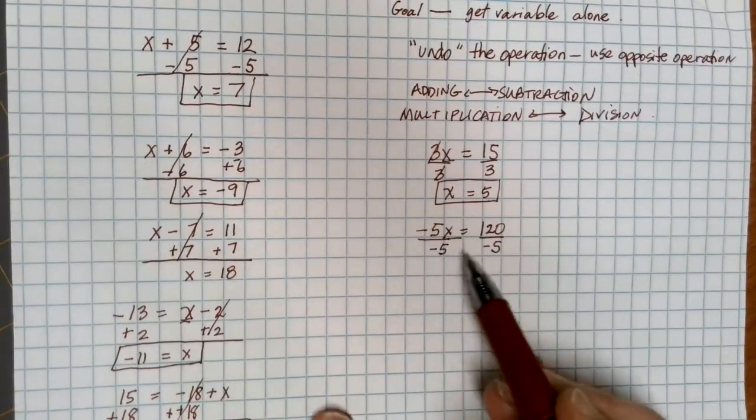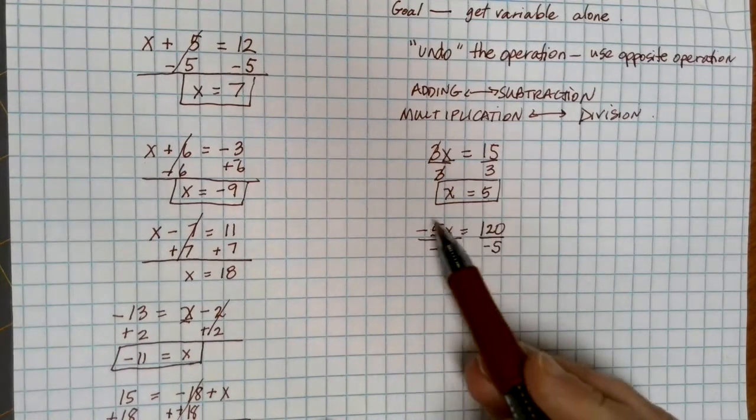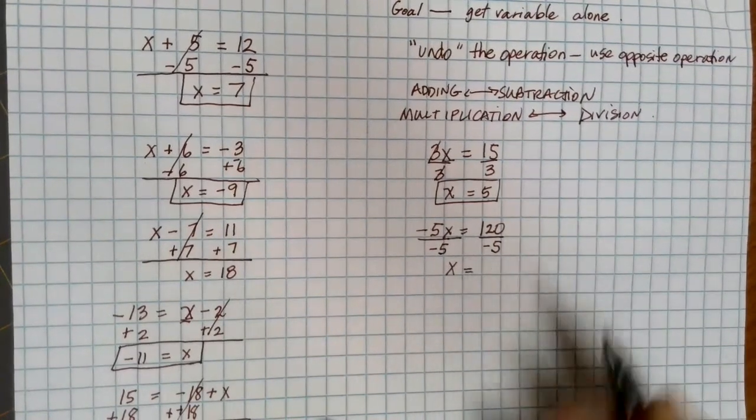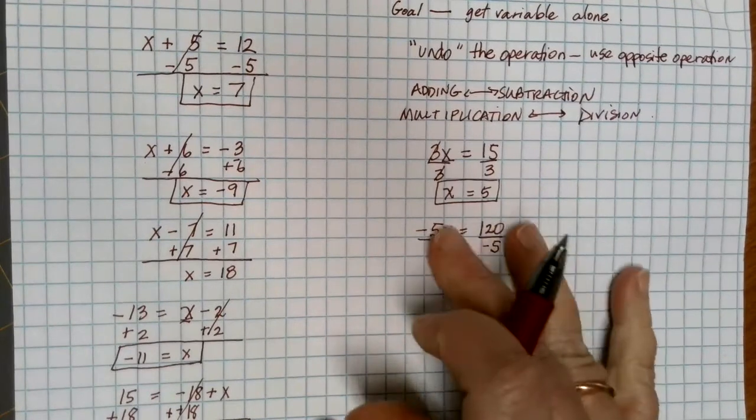One way you can think of this, if we have a negative 5 on top, we need a negative 5 on the bottom to divide out. Also, a negative divided by a negative makes a positive and leaves me just with good old plain x. So be really careful with the signs when you're multiplying and dividing. You've got to carry that sign through when you're doing the opposite operation.